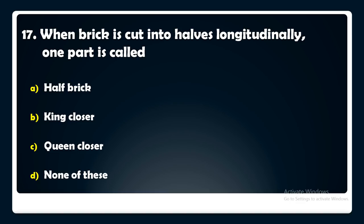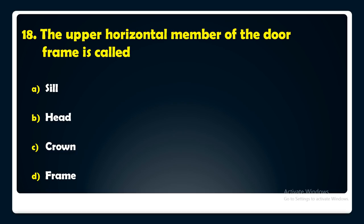The upper horizontal member of the door frame is called — sill, head, crown, or frame? The answer is: the upper horizontal member of the door frame is called a head.